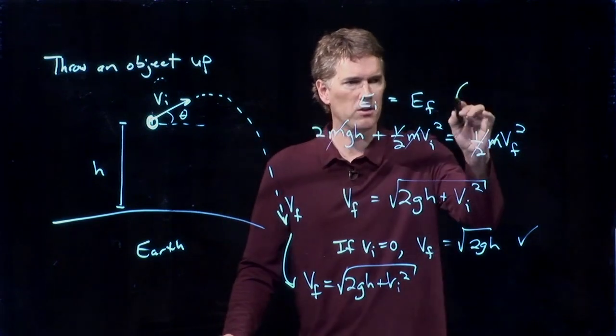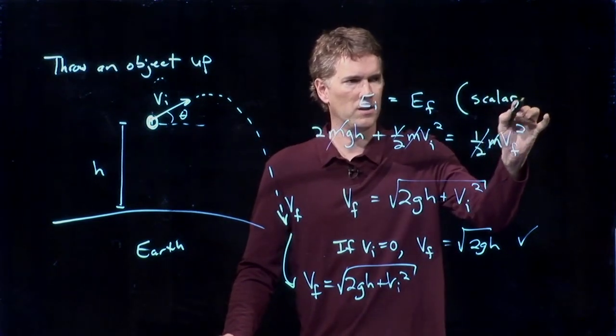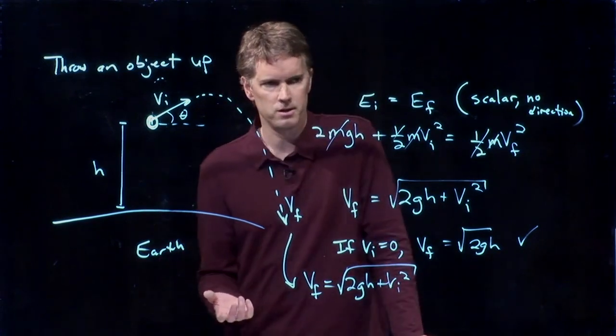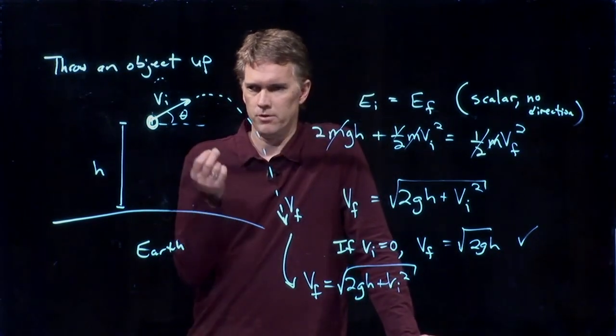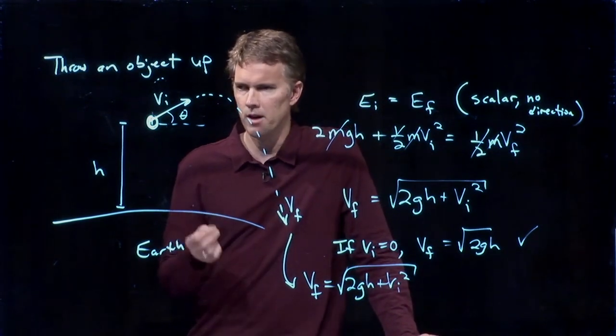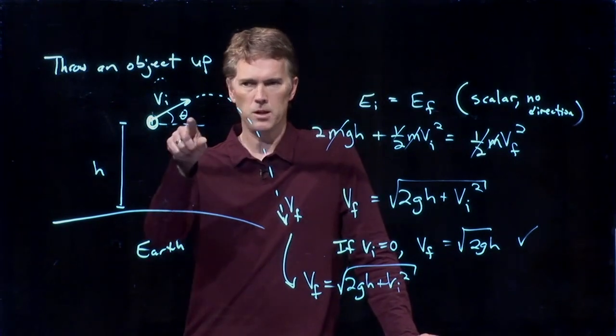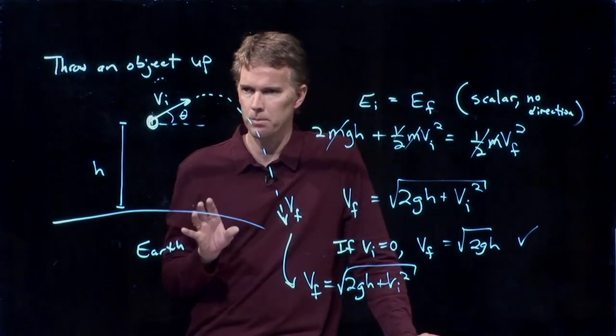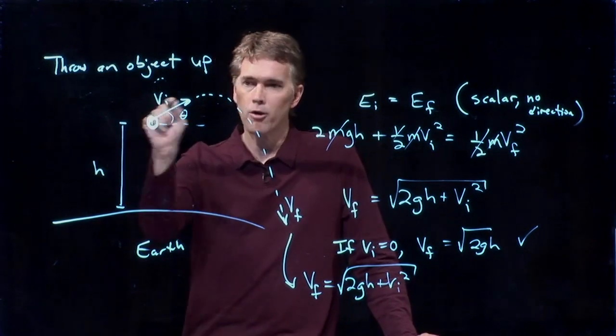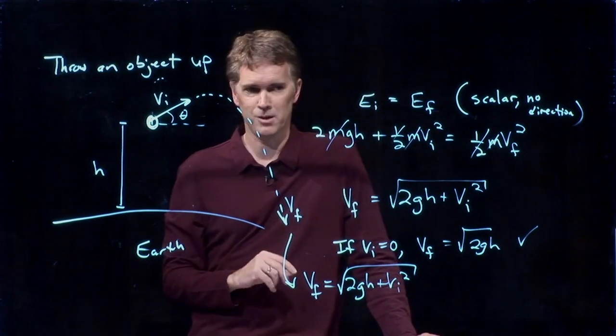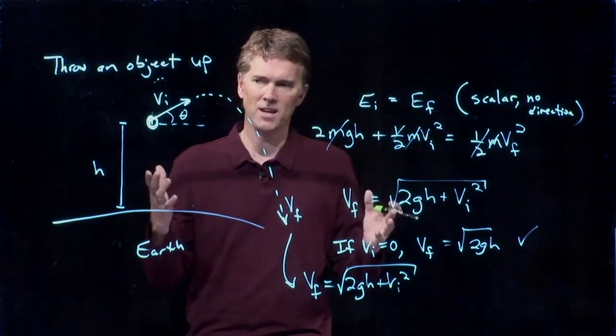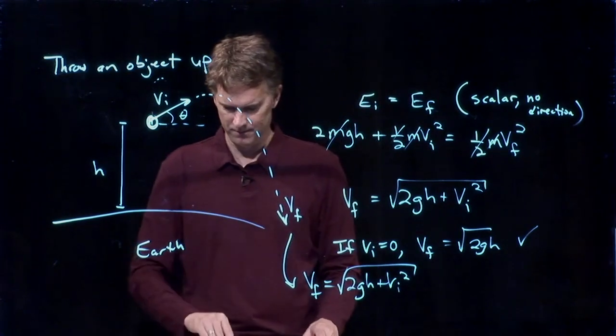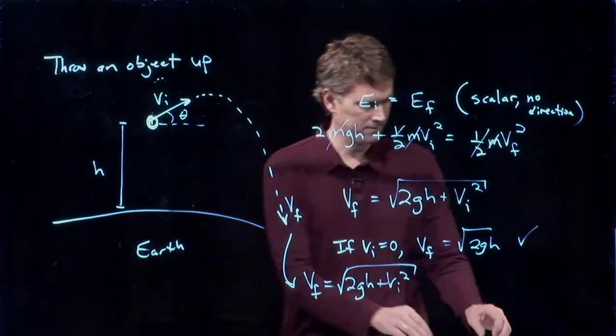And that's because it's a scalar equation. There's no direction associated with conservation of energy. There's no direction associated with energy. It's a number. It's 10 joules or 20 joules. It is a number. And so it's actually independent of this angle theta. It doesn't matter what direction you throw this thing. It's always going to hit the ground at that speed Vf. All it depends on is how high you started from and how fast you threw it. And that's it. Which I think is kind of cool, kind of a nice simplifying feature of conservation of energy.